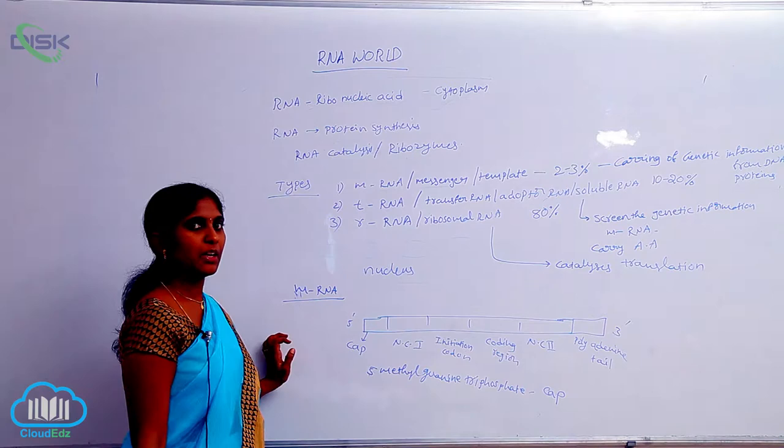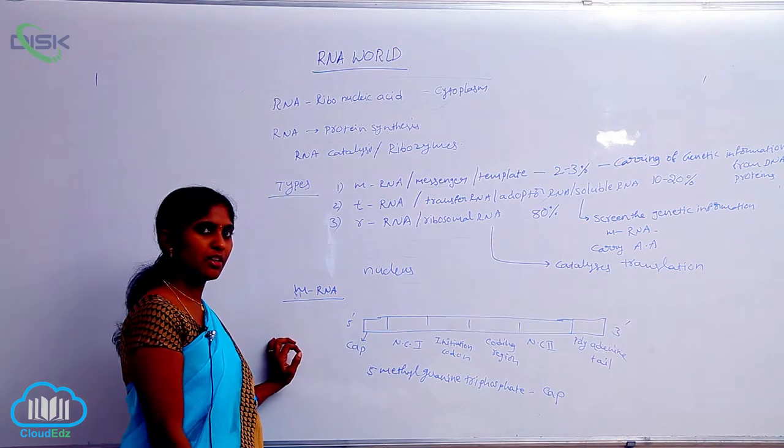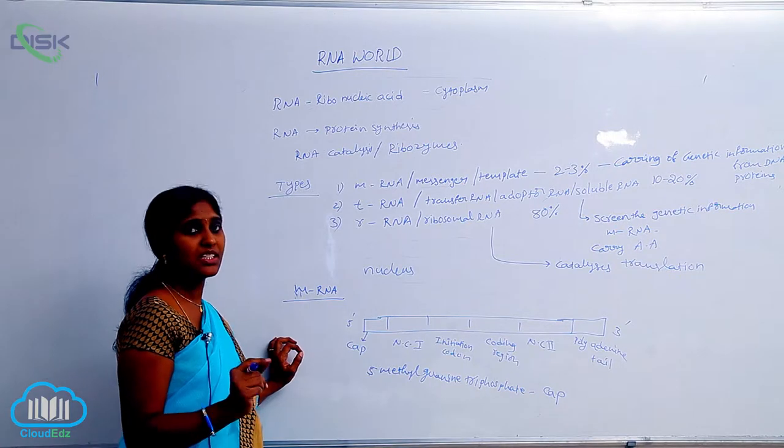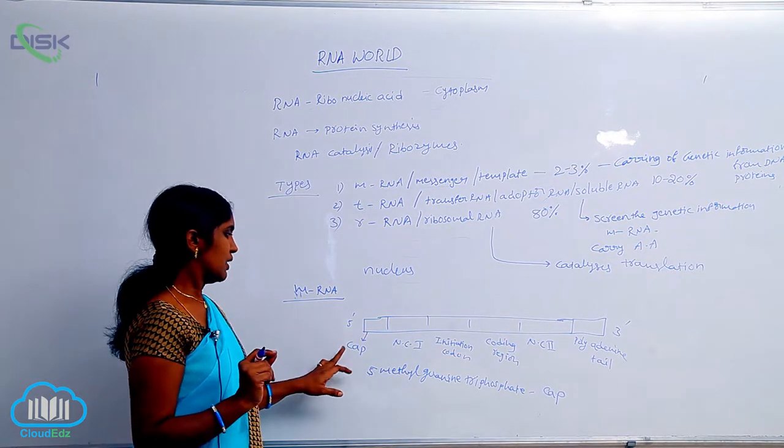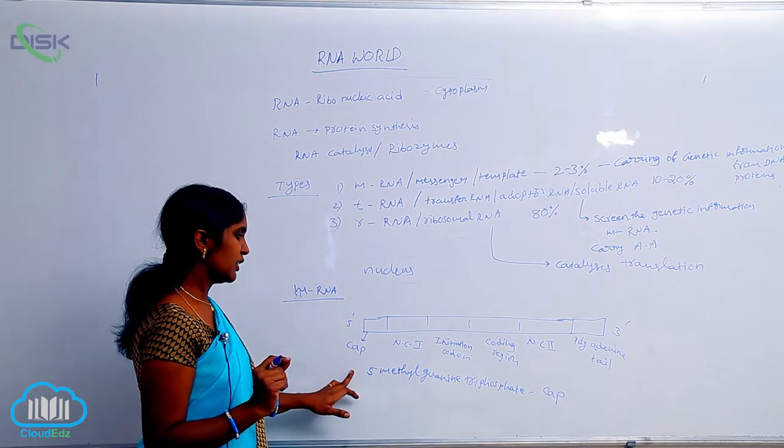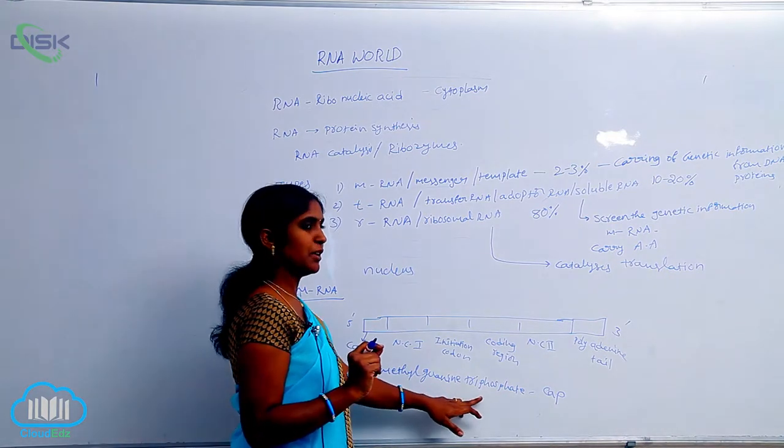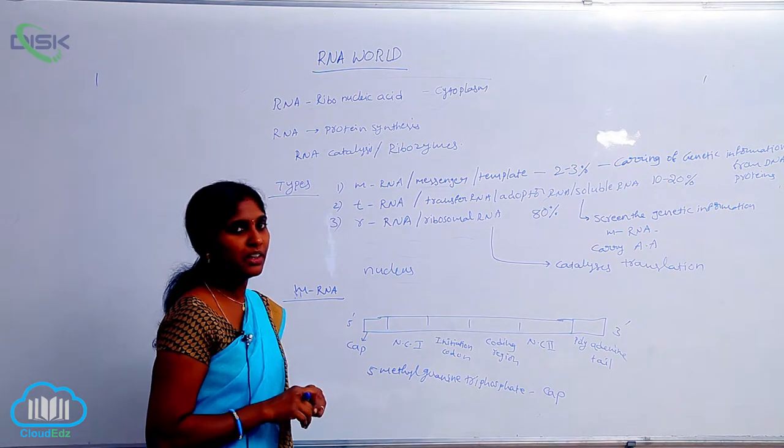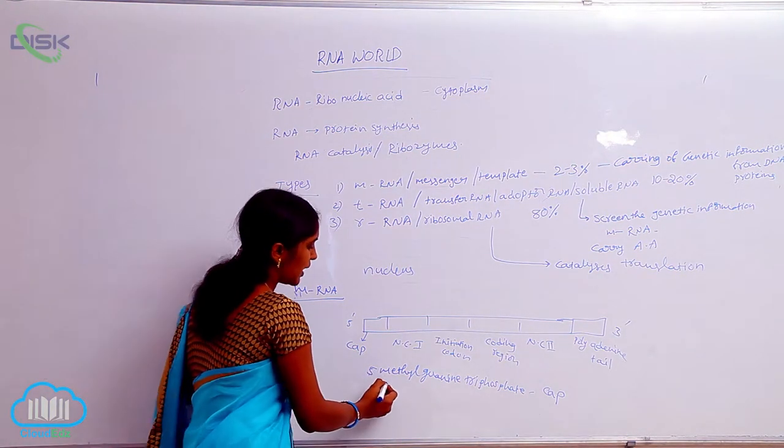After formation of the mRNA, it goes to RNA processing. The first step of RNA processing is capping. Capping means adding 5-methylguanine triphosphate at the 5' end. That is CAP. Why is it compulsory, why is it needed?